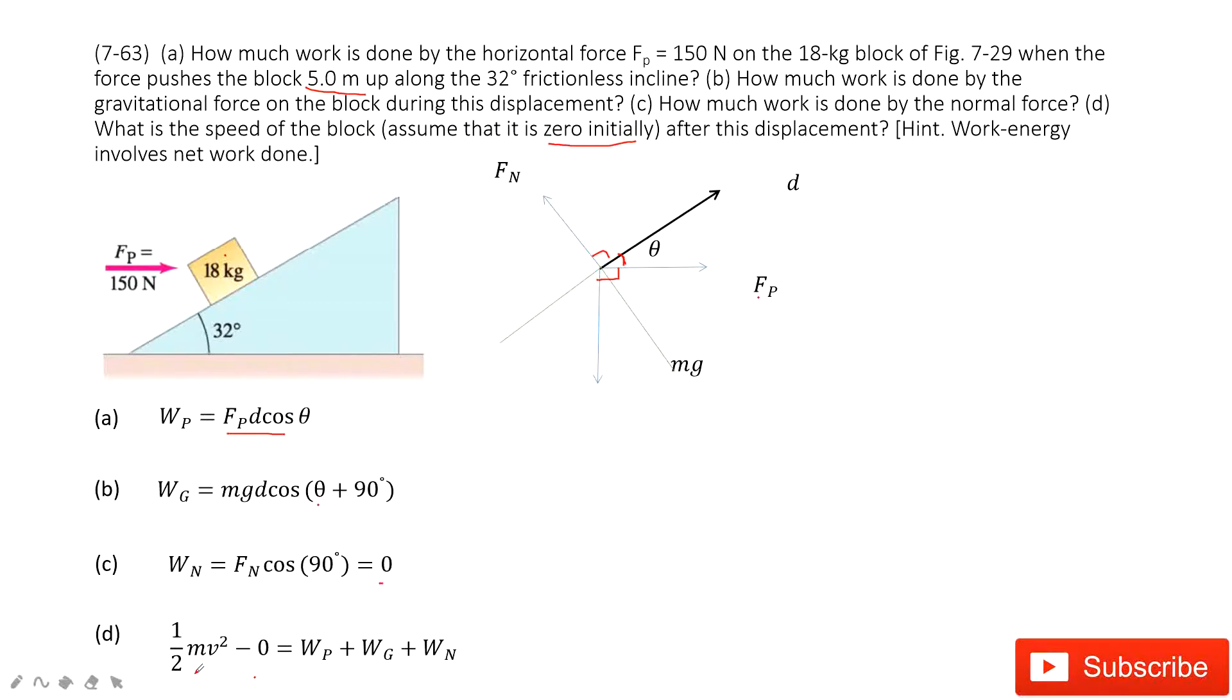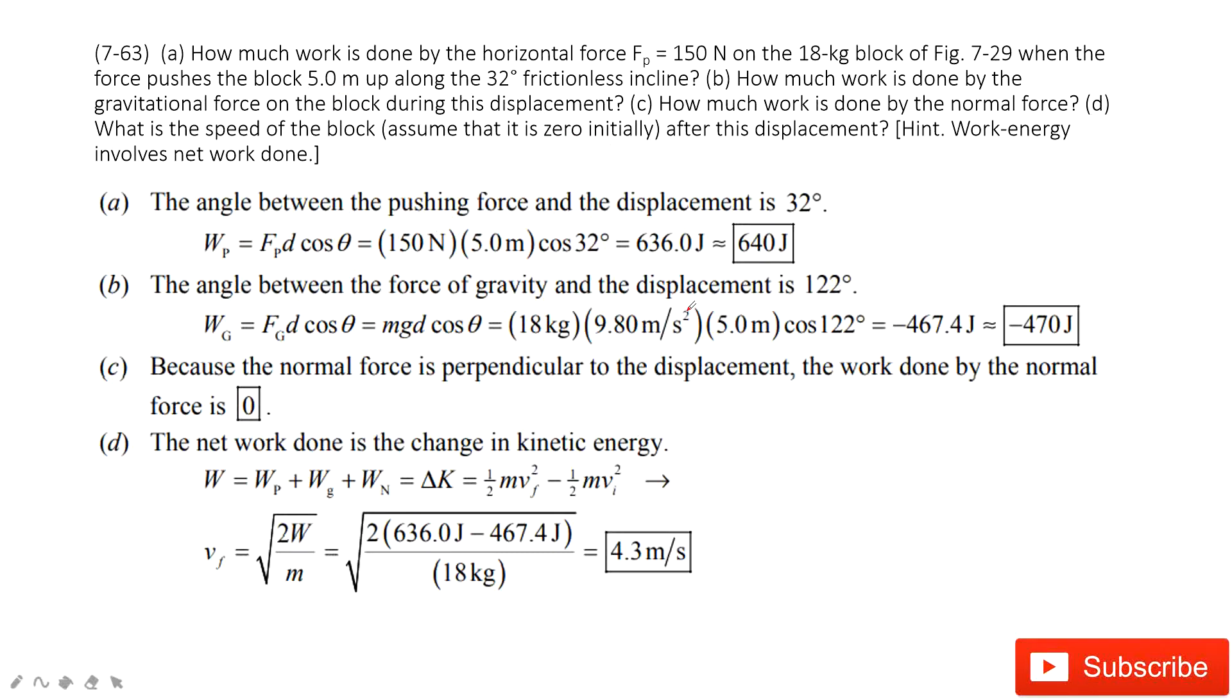So the final kinetic energy minus initial kinetic energy equals the net work. Final kinetic energy, one-half mv squared minus initial kinetic energy, zero, equals Wp plus Wg plus Wn, the net work. After you input the numbers inside, you get the final answers. Thank you.